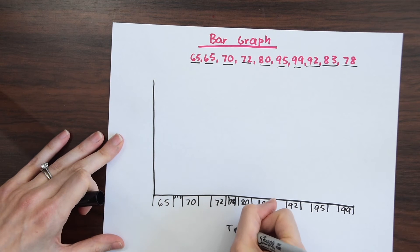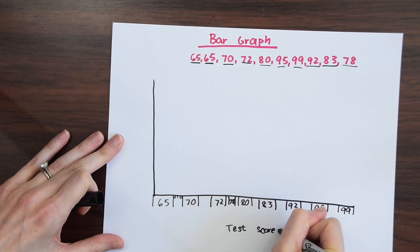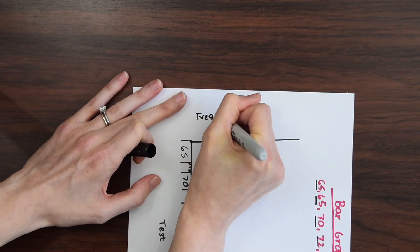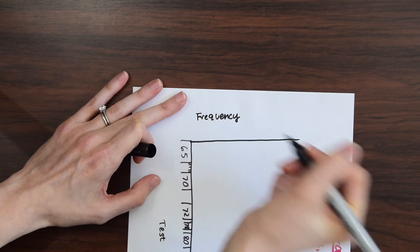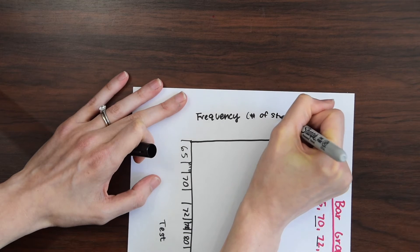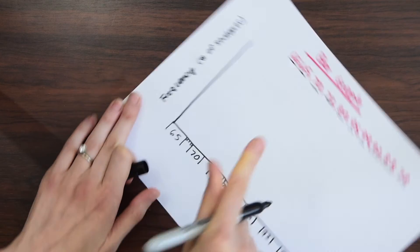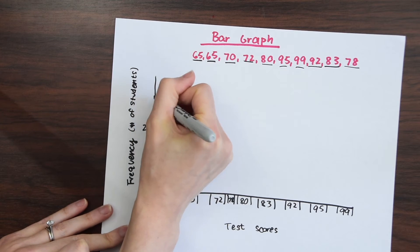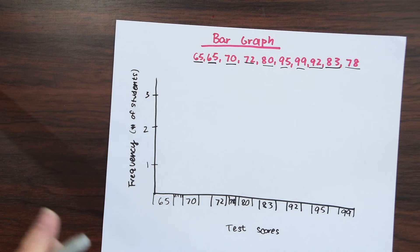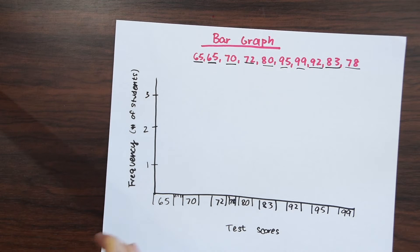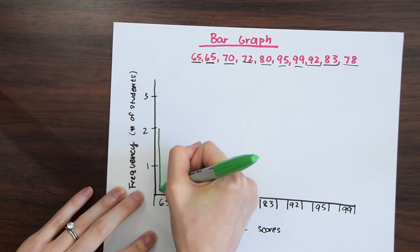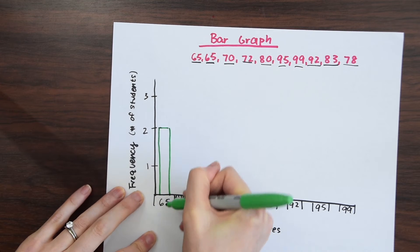These all represent test scores, so let's label our axes. We have test scores on the X axis and frequency along the Y axis. The frequency is just the number — in this case, the number of students who receive these test scores. We have one, two, three. Notice we only have one repeating number. So now to fill in our bar graphs, we have two values of 65, so we go to 65 and go up to two.